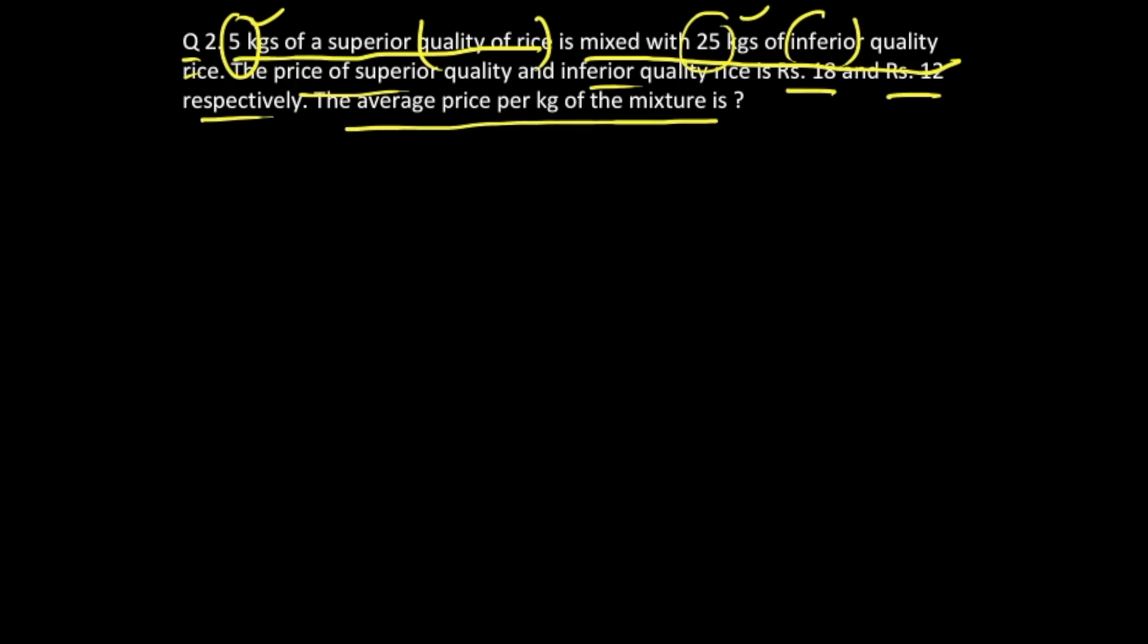In this question this becomes our type 2 wherein AW, the weighted average of the mixture, is not known to us. Instead of following the allegation method which we discussed earlier, we'll use the weighted average concept with the equation n1 by n2.